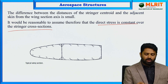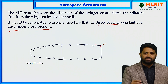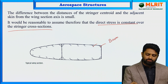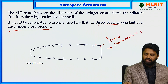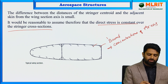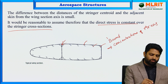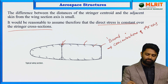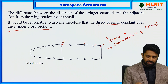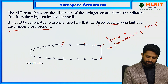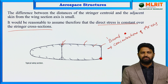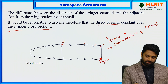Therefore, we are going to remove all the stringers and spar flanges and replace them by concentrations of areas, which we call booms. Booms are nothing but concentrations of areas. We are going to remove whatever stringers are attached to the skin of the wing section, and also remove the spar flanges, and replace them by booms. A boom is usually denoted by a thick dot, and it is placed along the mid-length or mid-span of the spar flange it replaces.